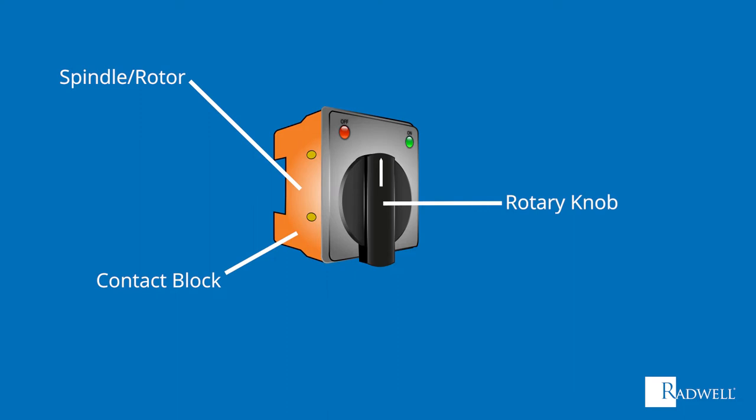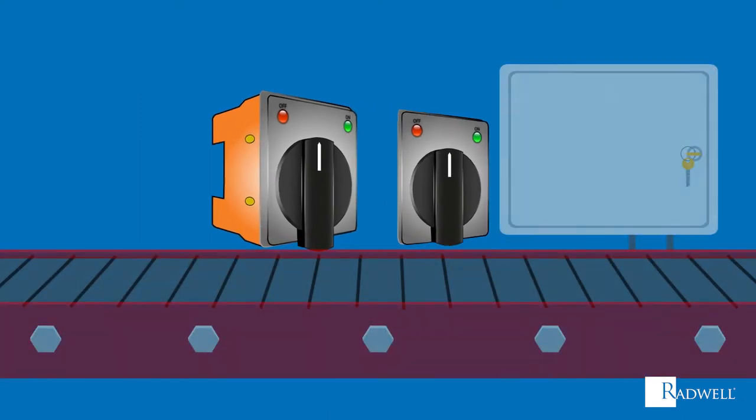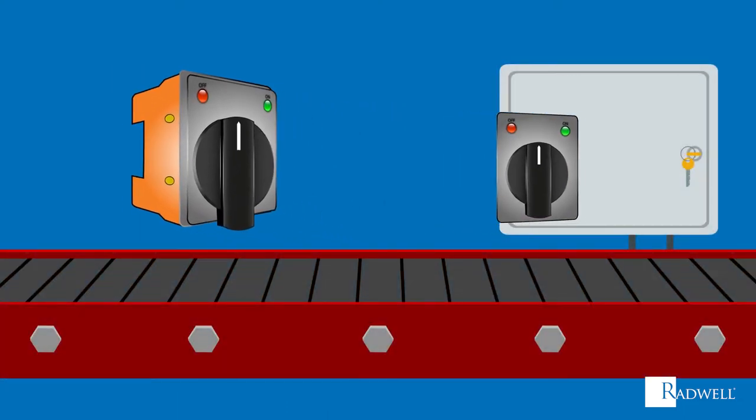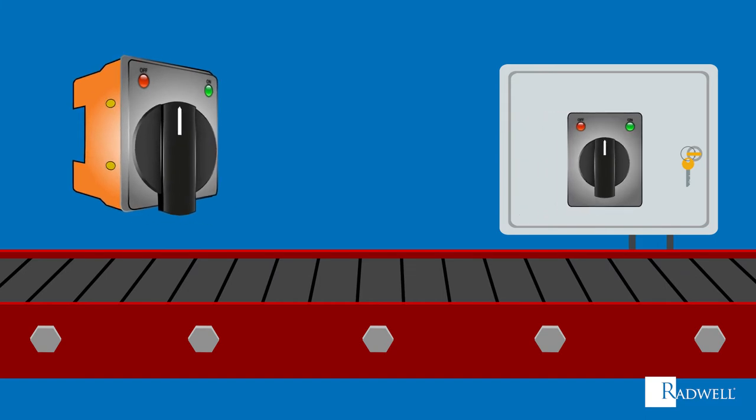Now that we've reviewed the basic components of a selector switch, let's talk about how a selector switch operates. Typically located on the front of a control panel, selector switches have a broad range of potential contact combinations.